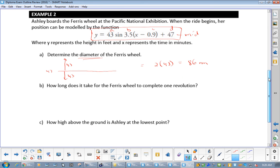Now how long does it take for the Ferris wheel to complete one revolution? It's asking for the period. And remember, period is 2 pi over b. So this case, b is 3.5, right? So we're going to go 2 pi divided by 3.5, which equals 1.795 minutes.